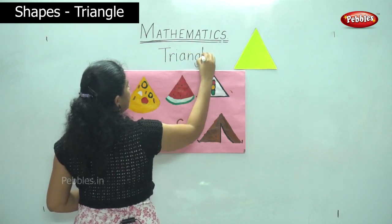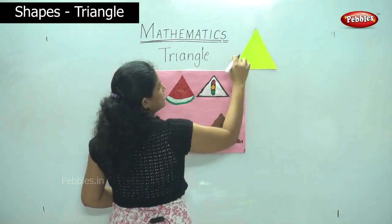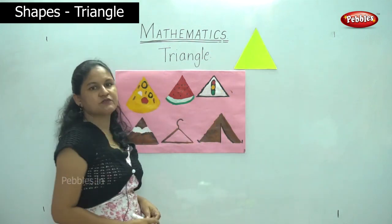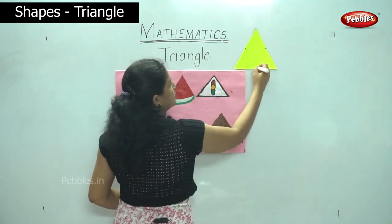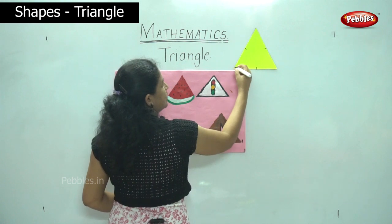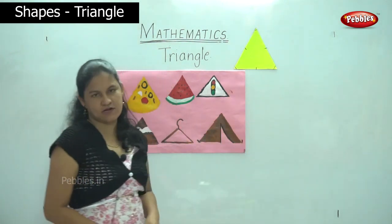A triangle has three sides and three corners. A triangle has three sides: one, two, three. Three sides and one, two, three, three corners.